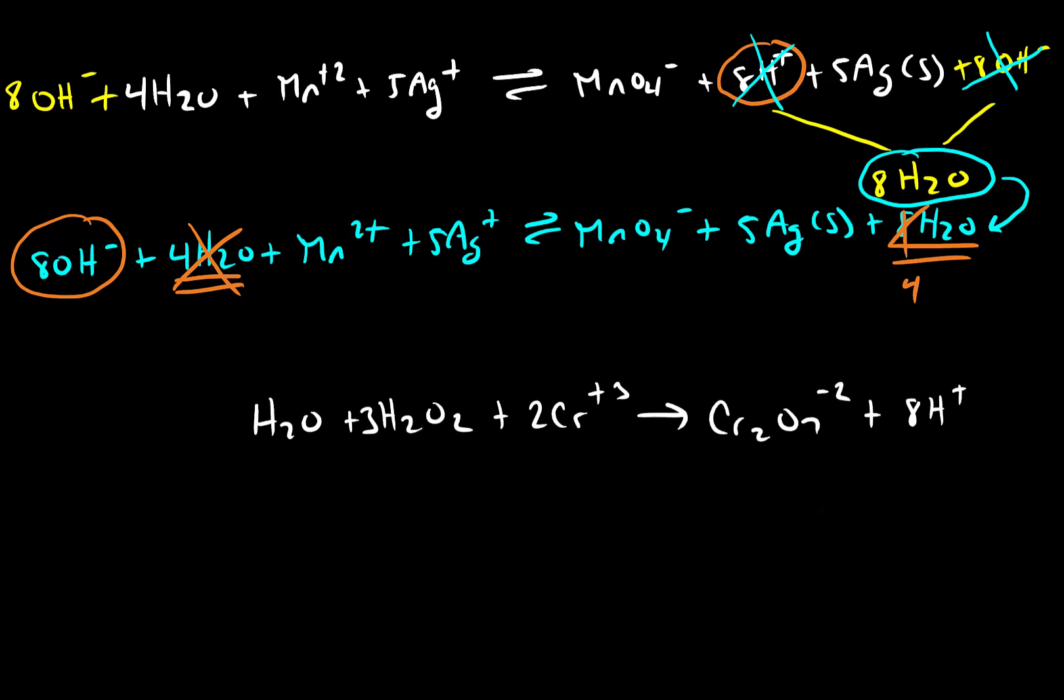If we react together hydrogen peroxide and chromium, we end up with this balanced electrochemical reaction. So in this case, we see that we have eight protons as a product. But if we were doing this reaction under basic conditions, we cannot have these here.